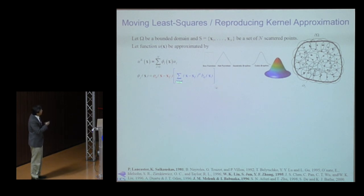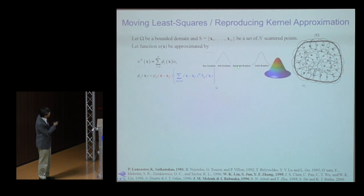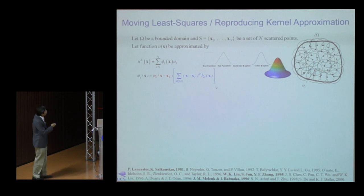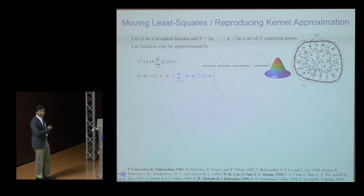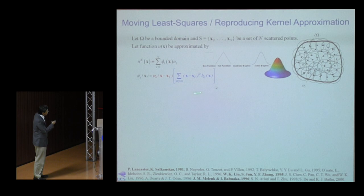The approximation is constructed by multiplying a kernel function — which determines locality and smoothness and can be discontinuous, C⁻¹, C⁰, or Cⁿ — with an enrichment function that introduces the basis, typically polynomials up to degree n.